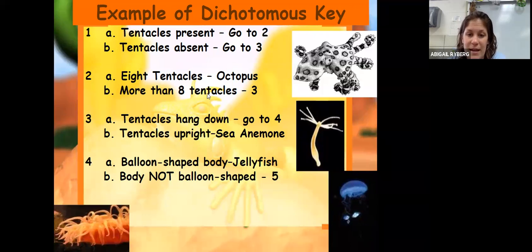You can see there are in fact tentacles hanging down, so I pick tentacles present, which tells me to go to two. So I hop to question two: eight tentacles or more than eight tentacles. It's hard to see but there are way more than eight tentacles, so that tells me to go to three. Tentacles hang down or tentacles upright. These tentacles are hanging down, so I go to four. Four says balloon-shaped body or body not balloon-shaped. This is balloon-shaped, which tells me that it's a jellyfish. So you can see that in every option it may tell you to go to another question or it may identify your critter.